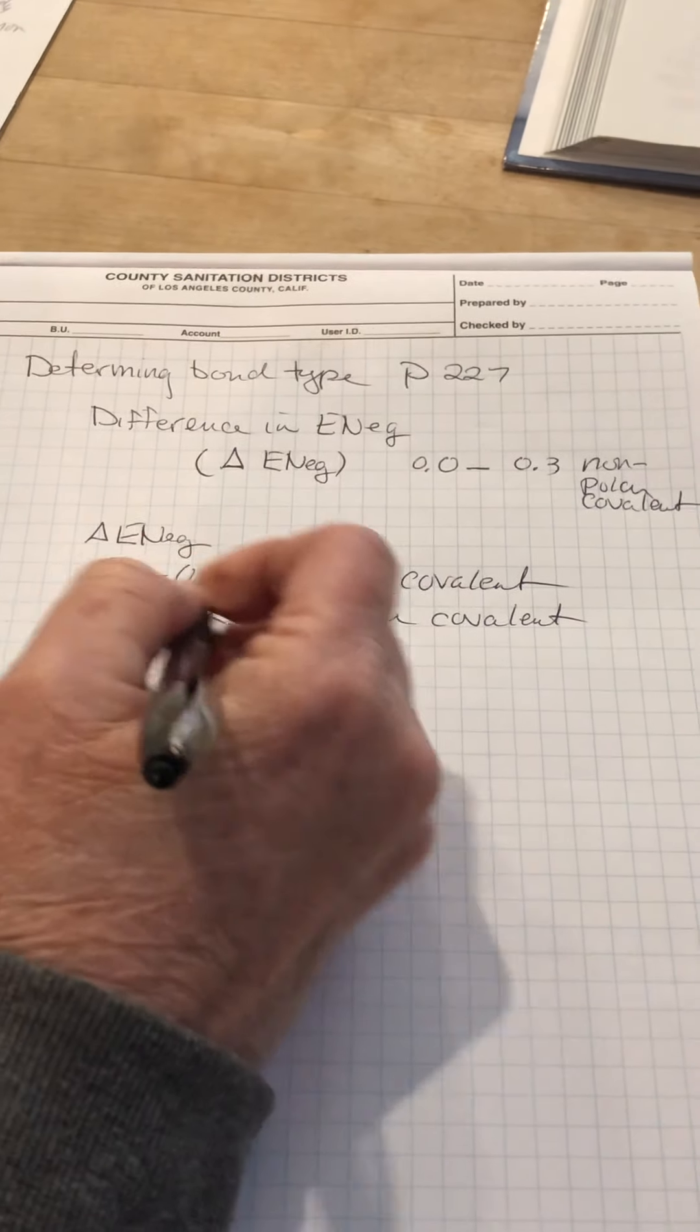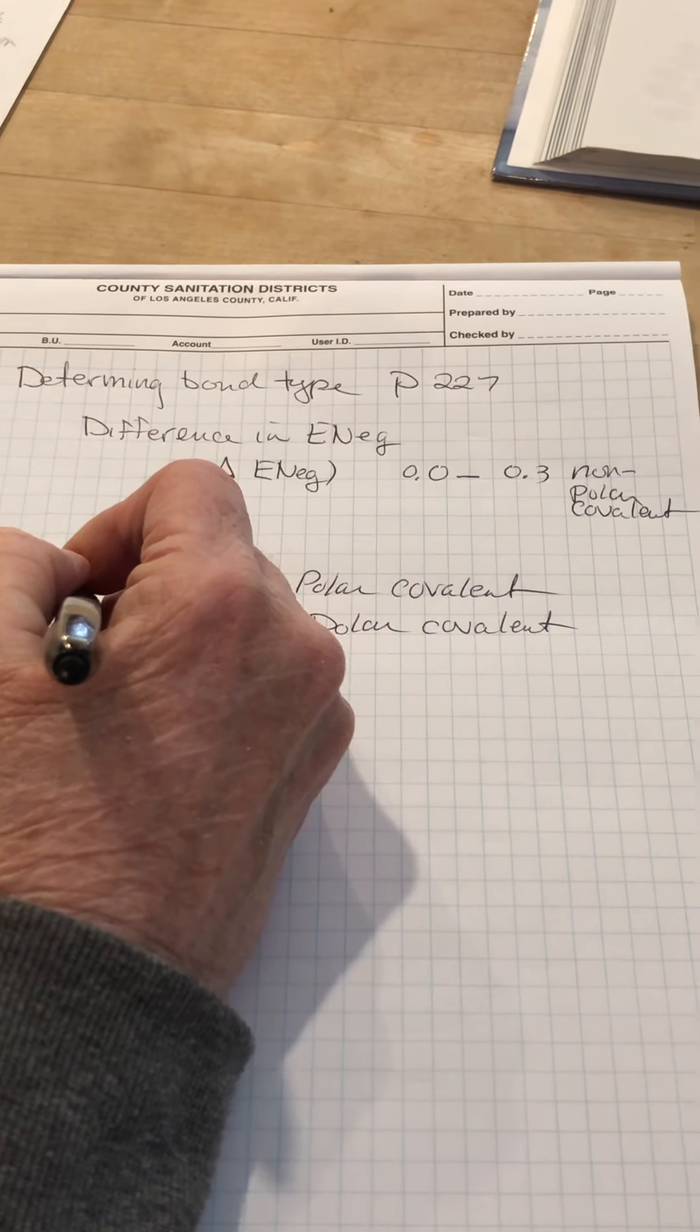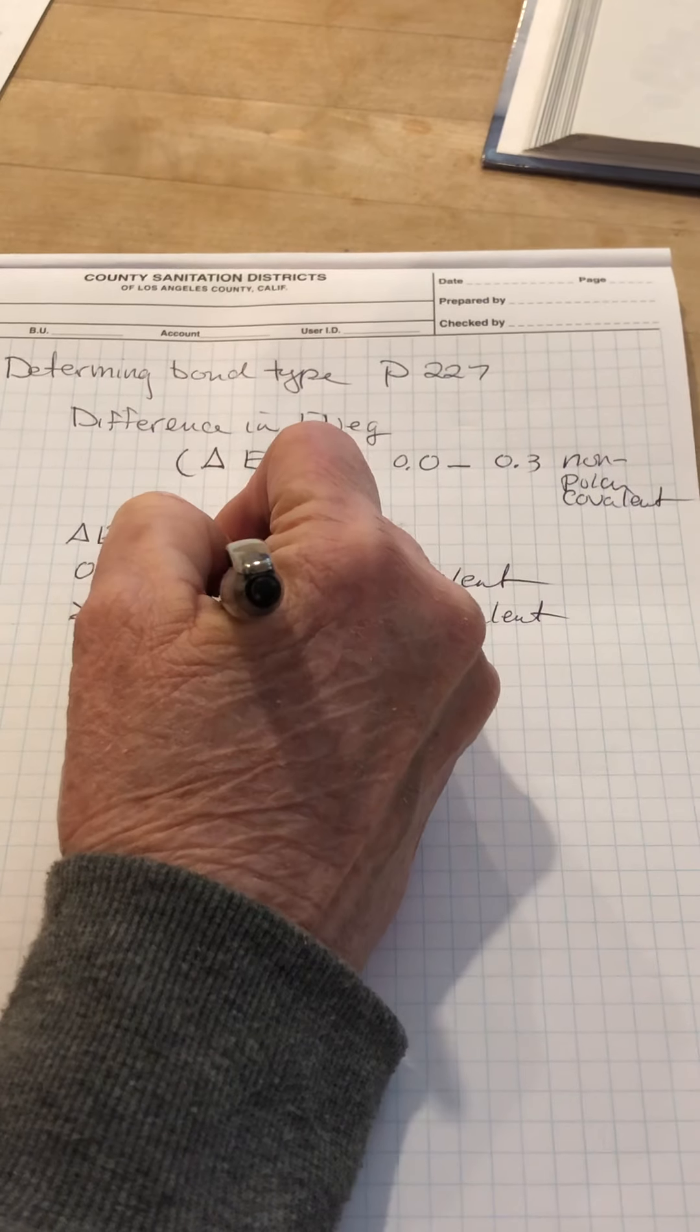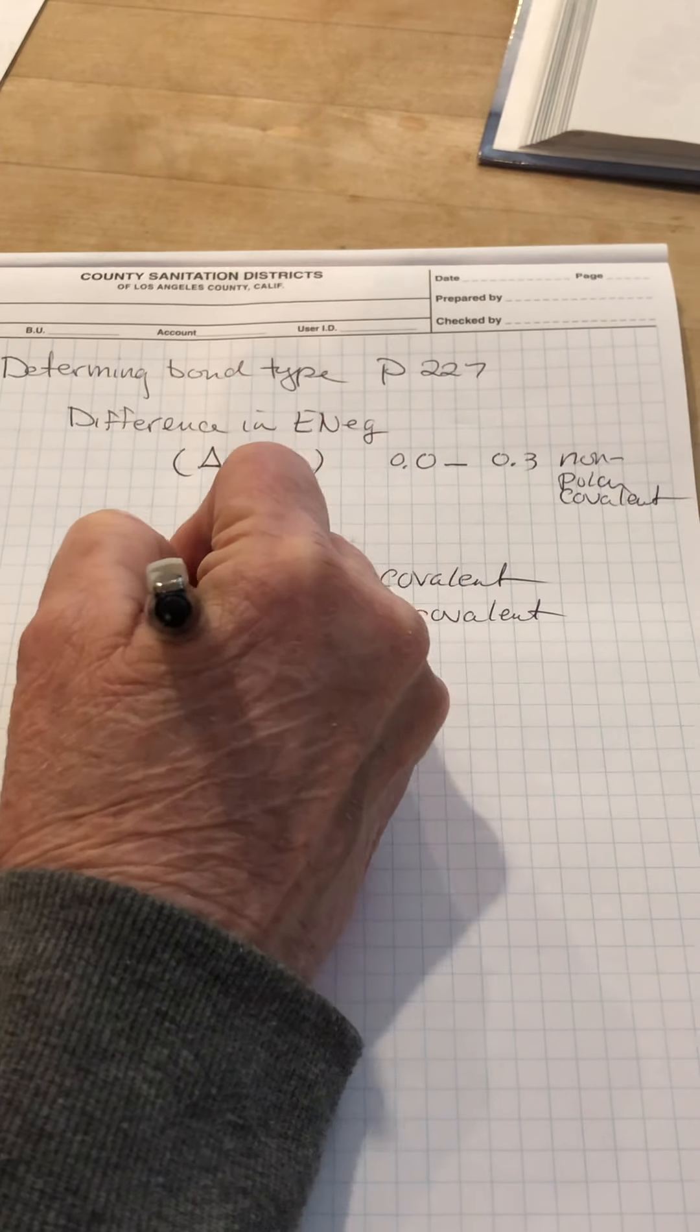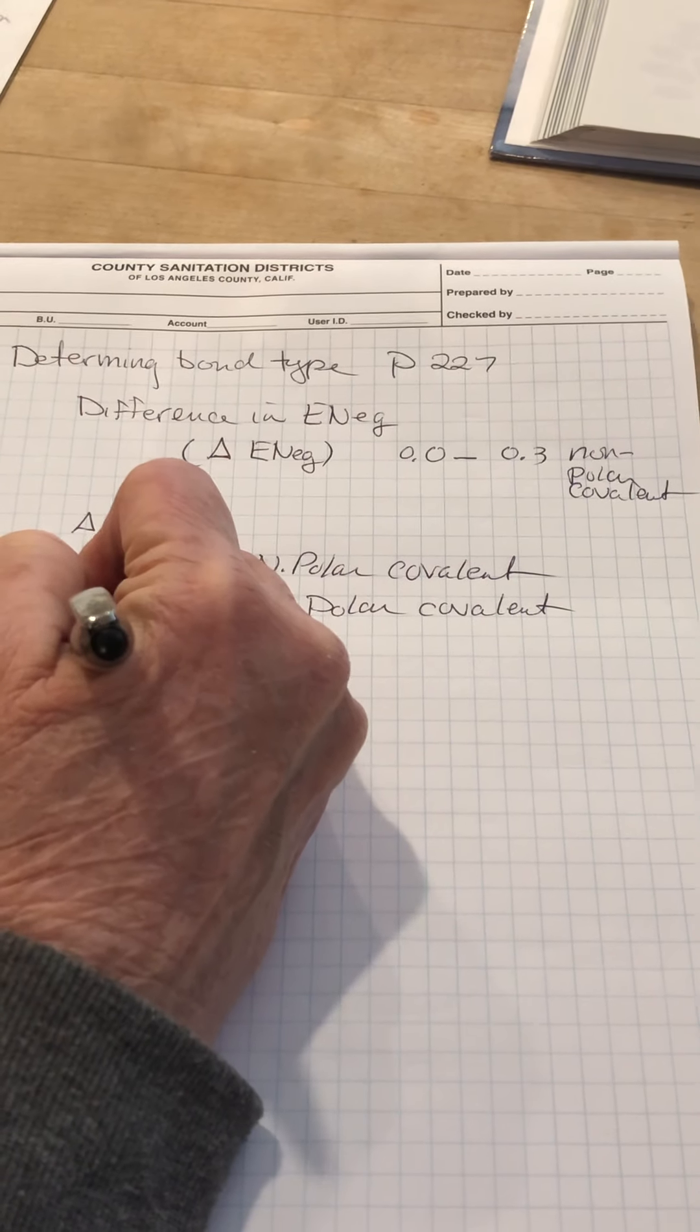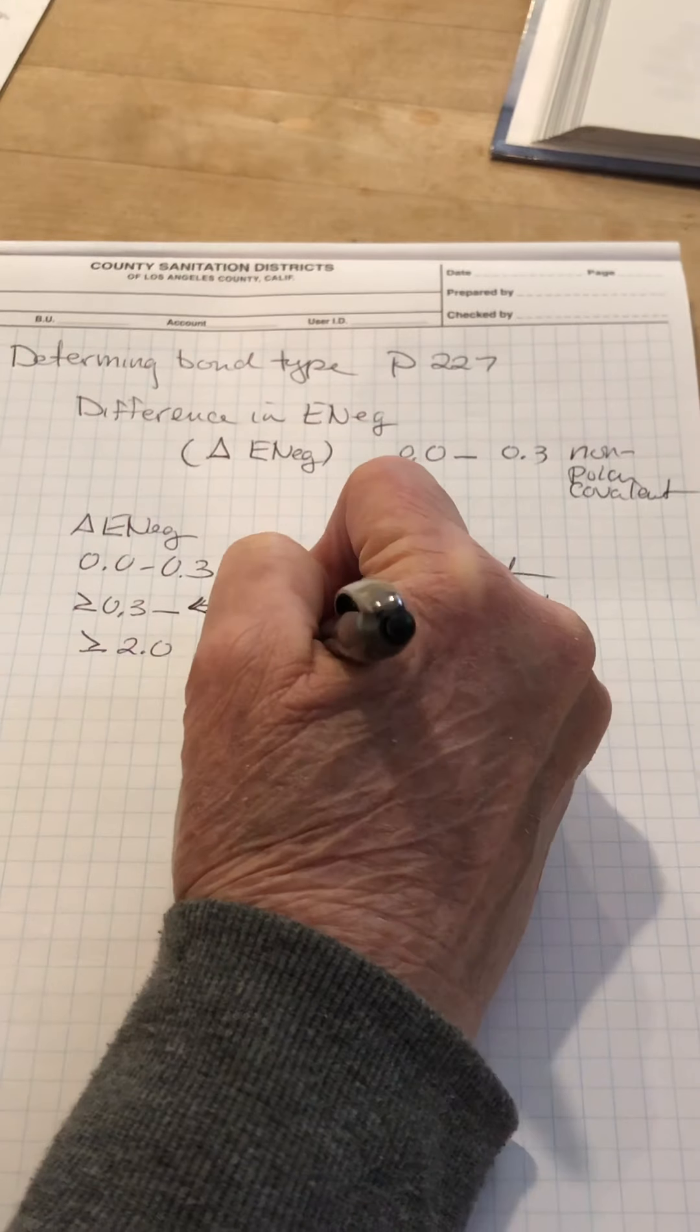Unequal electron sharing. What did I just do? Ignore that number. That number is 2.0. Sorry. If the electronegativity is greater than or equal to 2.0, we have an ionic bond.